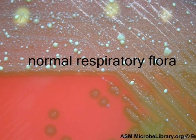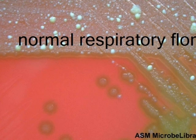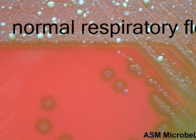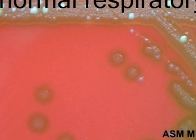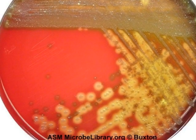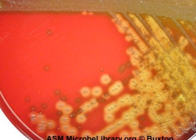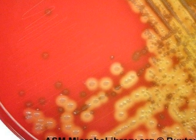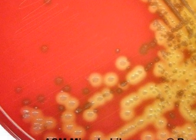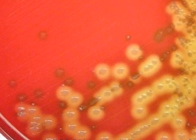Here is an example of what blood agar plates swabbed from the throat might look like. Note the appearance of the alpha hemolytic colonies and one gamma hemolytic colony in the isolated colony streak. In this culture from the throat, beta hemolytic colonies most likely indicate Streptococcus pyogenes, a true pathogen. Notice that the beta hemolytic colonies are also mixed within alpha hemolytic colonies, which are normal flora.